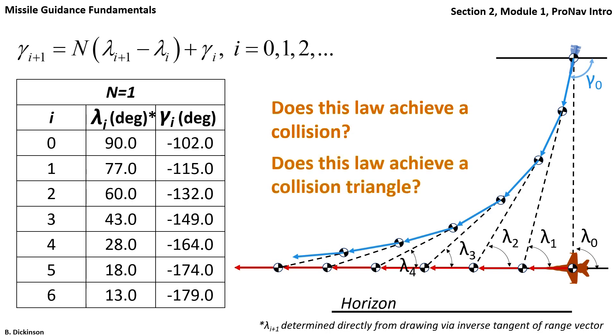Does this law achieve a collision triangle? Well, no, it does not. We know this because the flight path angle and also the lead angle, therefore, is changing continuously. Now this may not be fully unexpected because a gain of n equals one means that for any degree change in the line of sight, we get an equal degree change in the flight path angle. So this guidance law is known as pursuit guidance. And in pursuit guidance, there is no lead of the target. Lead of the target, of course, is key to getting a collision triangle. Hence, again, there is no collision triangle.